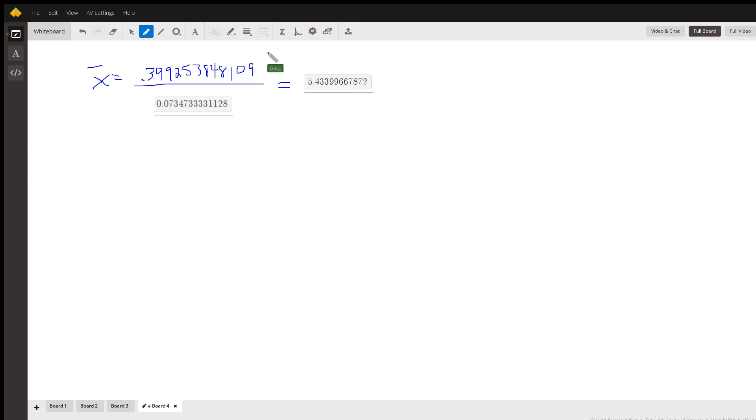So x-bar is m sub y, moment about y divided by the area between two curves. There's the x coordinate of the centroid. Finding m sub x...